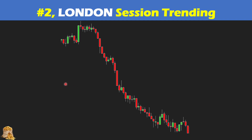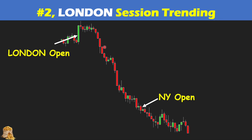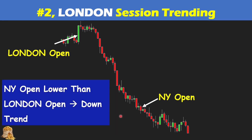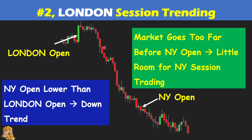Now let's look at the third example for London session trending. The London open is here, New York open here — it's a downward channel, very tight, strong trend, meaning probably today is a downtrend day. However, you can see that after that, the room for the market to go down even further is very limited. So if the London session goes down too much before the New York open, there's no room for the New York session, and you may want to wait and hold. Also, the London open has a very huge bull bar here — would this be the London breakout? No, because we want to see consecutive bull bars to be convinced. If you trade based on only the first bull bar, you're going to lose.